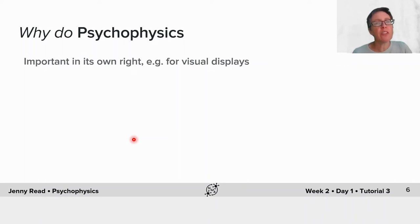I think psychophysics is really important in its own right. There are lots of reasons why one might want to measure very precisely what humans can perceive. For example, in visual displays, if you're designing a visual display, you need to know exactly what level of detail and what colours a human being can perceive.